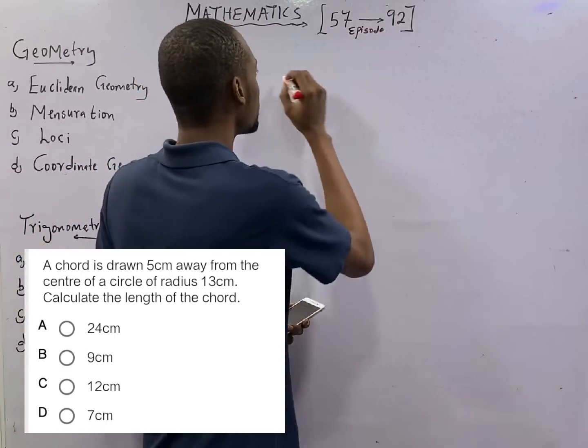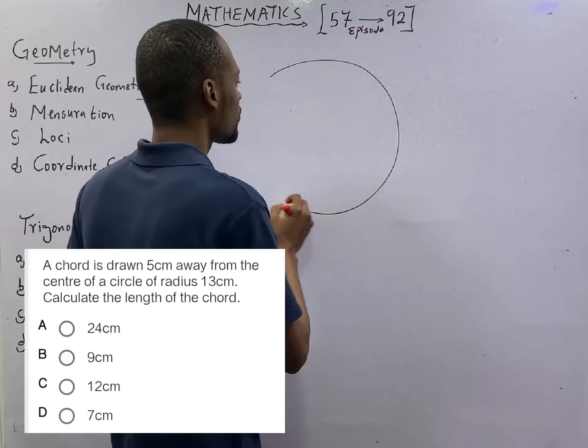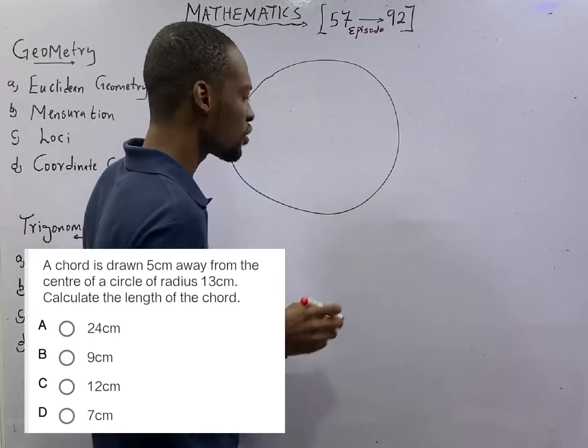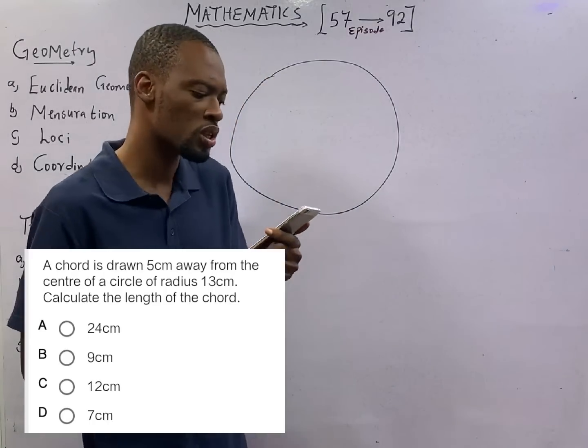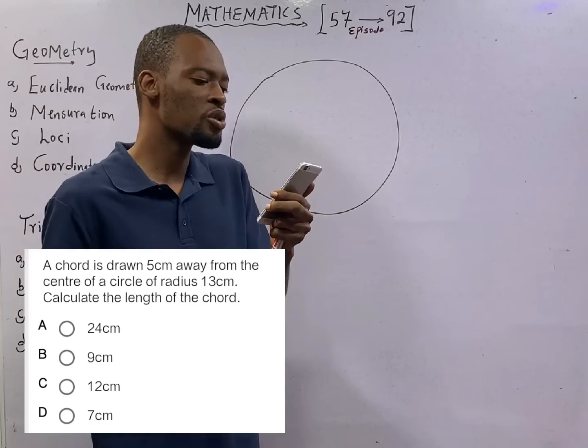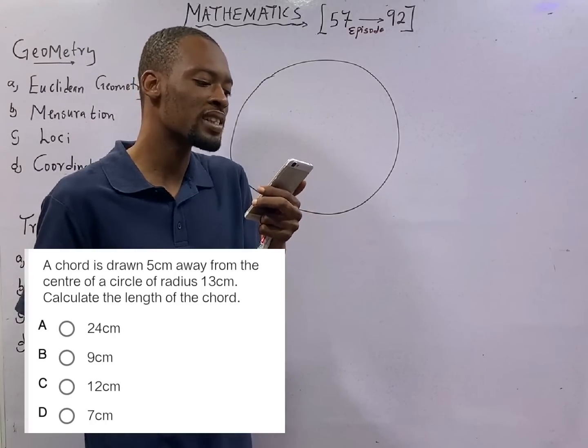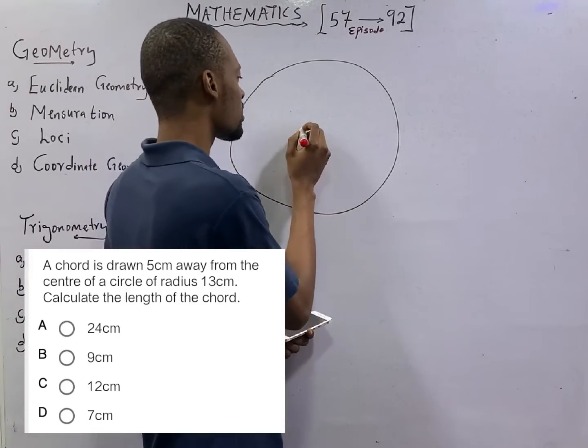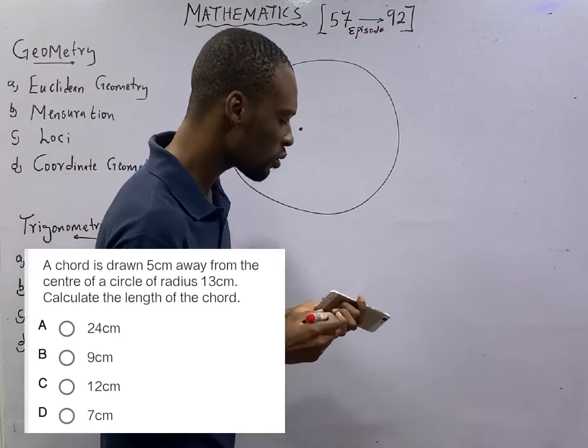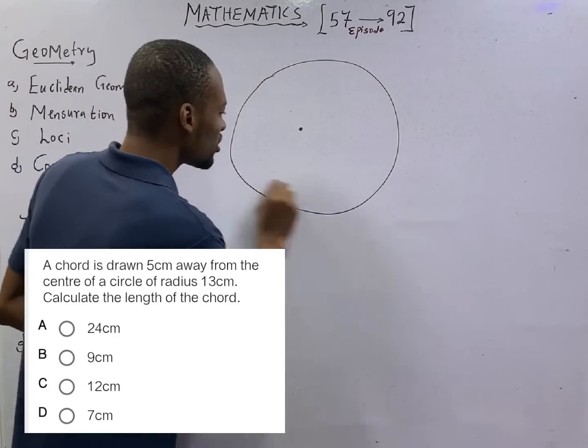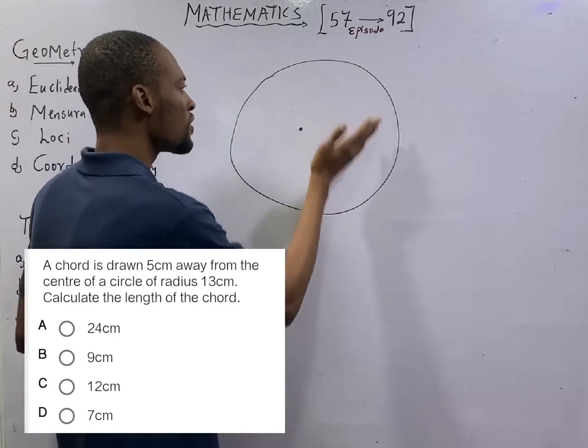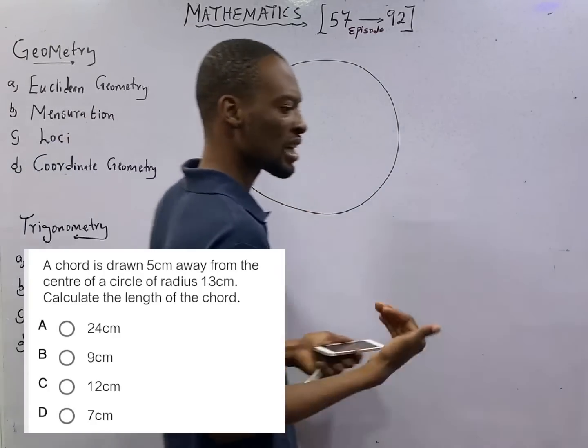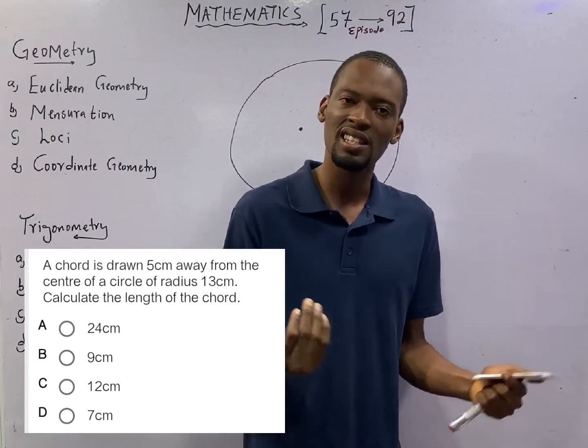One, we know that we are dealing with a circle. Two, a chord is drawn 5 centimeters away from the center of a circle. I told you earlier that if this is the center of a circle, if you draw any line to touch two sides of a circle, that is referred to as a chord.